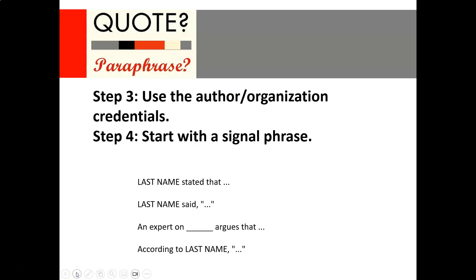In this paragraph you can see the next steps. Step three is to use the author or organization credentials, and step four is to start with a signal phrase. A signal phrase means we always use the author's last name or family name — not their first name. If the source is an organization rather than a person, we use the organization's name, like the United Nations or the New York Times, especially if no author is given.